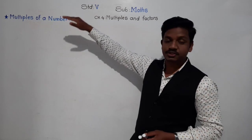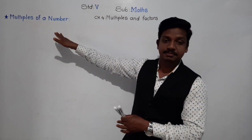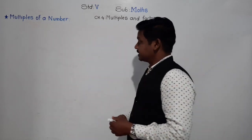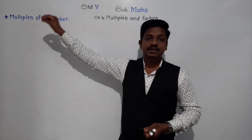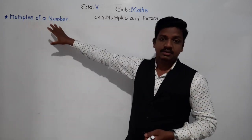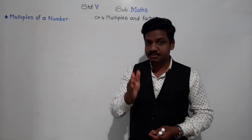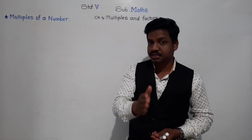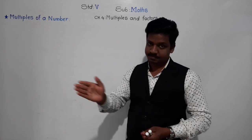First of all, we will see what is meant by multiples. You will be given any number — any natural number. Natural numbers are the numbers starting with 1: 1, 2, 3 — the counting numbers.